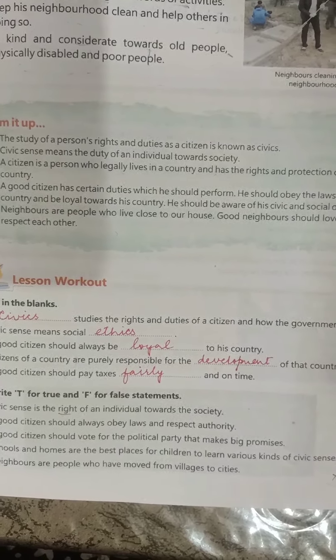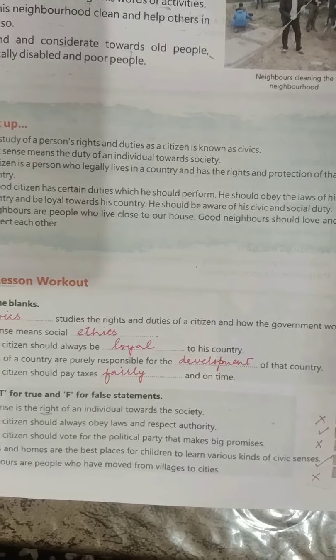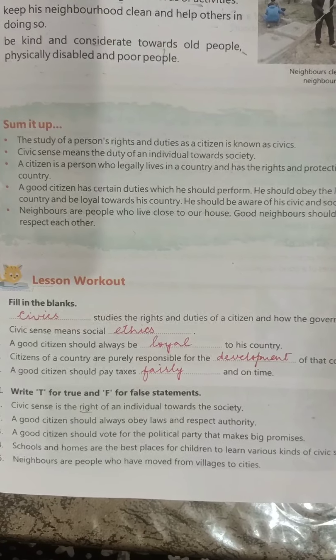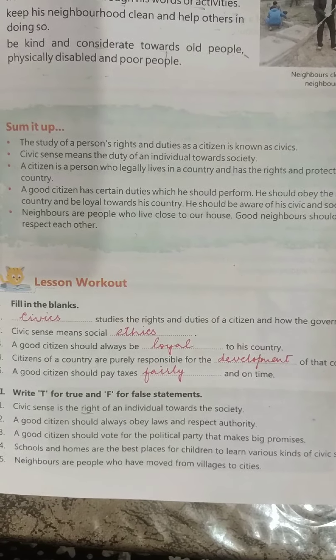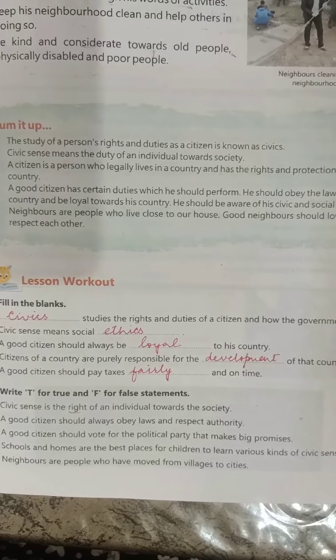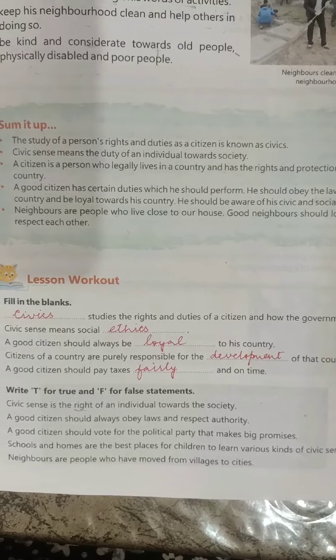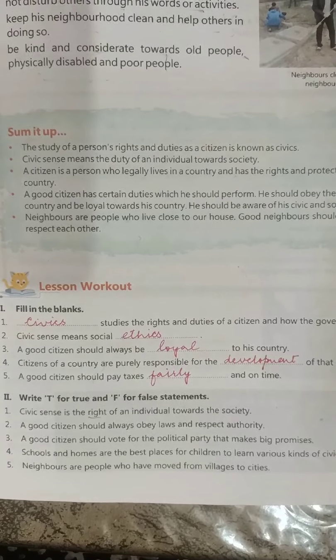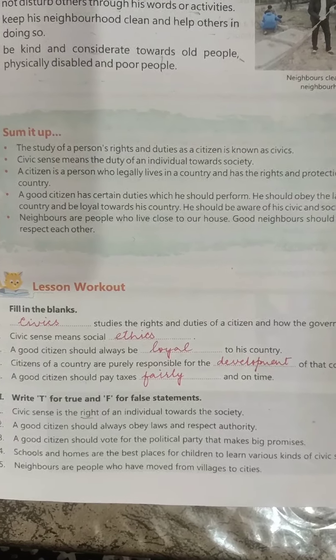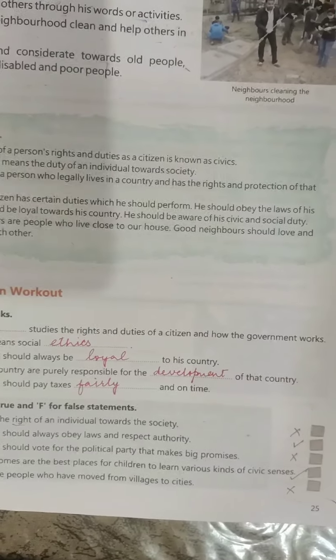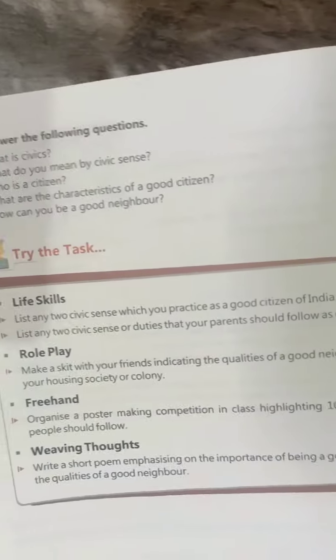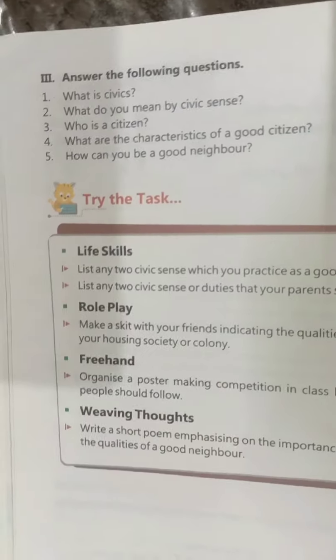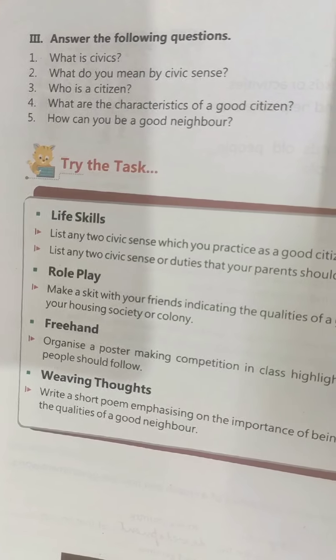Third: a good citizen should vote for the political party that makes big promises — false. Fourth: schools and homes are the best places for children to learn various kinds of civic sense — true. Fifth: neighbors are people who have moved from villages to cities — false.